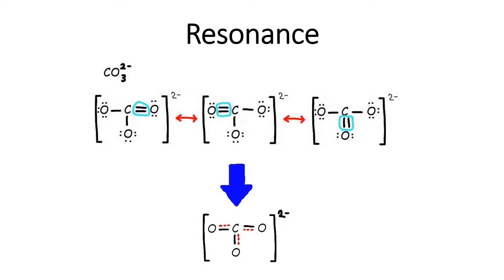Let's start with equivalent structures. To explain equivalent structures, I am taking the example of the carbonate ion. We drew the Lewis diagram for carbonate ion in topic 2.5 — carbon has a double bond with one oxygen and single bonds with the other two oxygens, with two negative charges overall. I am numbering these oxygens: oxygen number 1, oxygen number 2, and oxygen number 3.